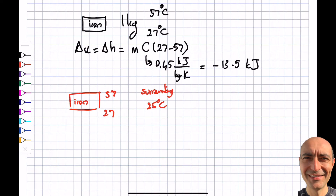The answer is no. It's not going to go up to 57°C — if anything, it will go down from 27°C toward 25°C. But in terms of the first law, there is nothing that prevents this reverse process. The first law would say the internal energy can gain 13.5 kJ going from 27 to 57°C. Your logic, as well as the second law, tells us this is impossible — and I'll use the second law to prove it.